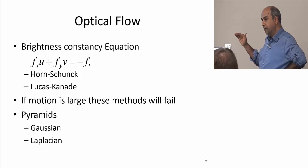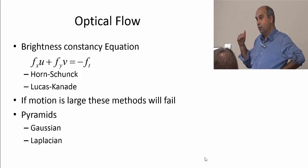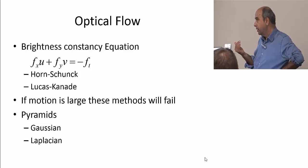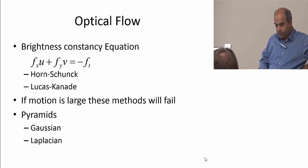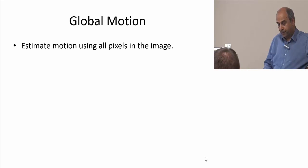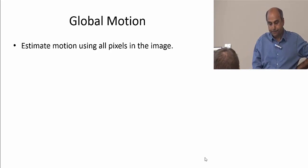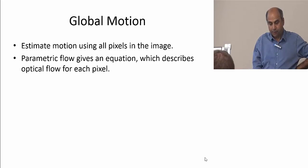To address large motion, we use Gaussian pyramids, which reduce the motion at different pyramid levels. Each level reduces the motion by half in x and y. Now we are going to talk about global motion. The motion in optical flow is local — every pixel has a vector u and v. Now we want to talk about global motion, in which all pixels are used to get the motion from frame 1 to frame 2. This is called parametric flow.